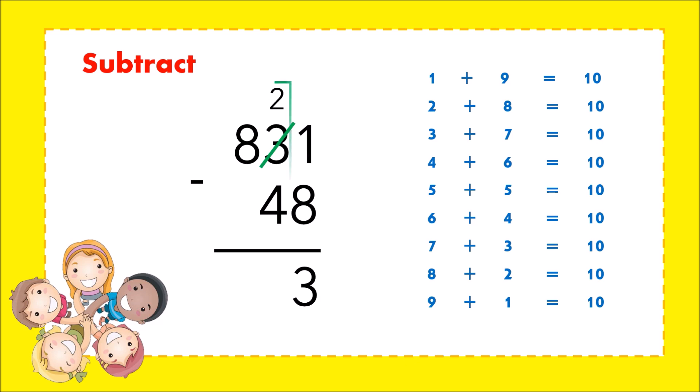Since 2 minus 4 is not possible, we will use partner numbers again. Partner of 4 is 6. Add 6 to 2 and the answer is 8. Borrow 1 from 8. 8 becomes 7.